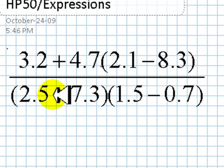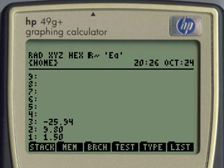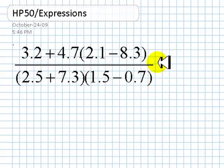Let's go now with the denominator: 2.5, enter, 7.3, enter. We are ready for the first operation. We can add 2.5 and 7.3, 1.5, enter, 0.7, enter. We can subtract those two numbers. We can multiply with the other previous result, and we can divide now the numerator by the denominator. That is the final result, negative 3.31. And that is the way to use RPN to evaluate an expression.